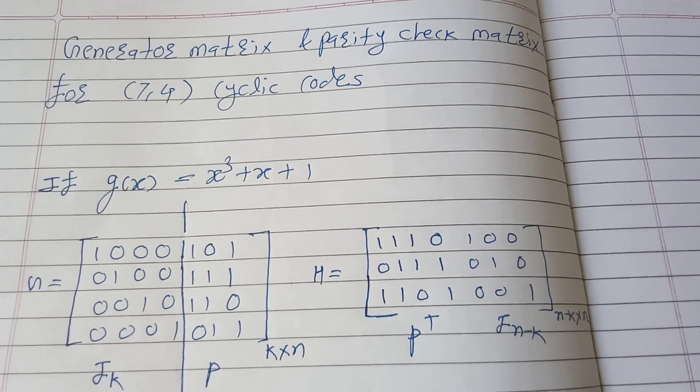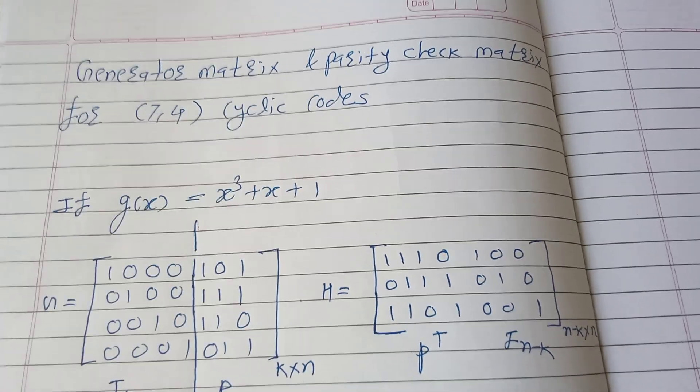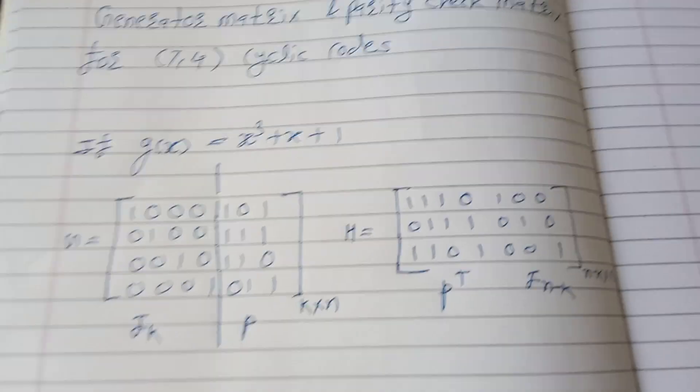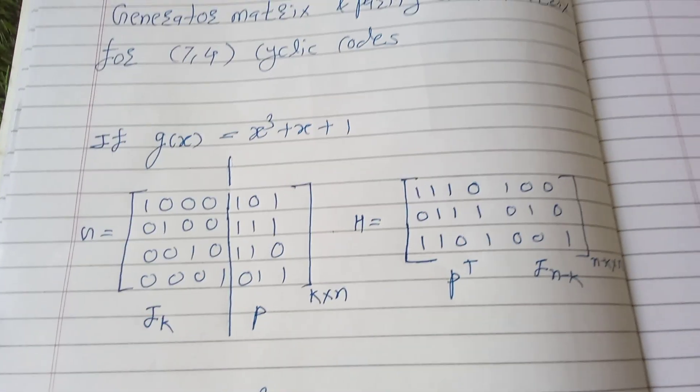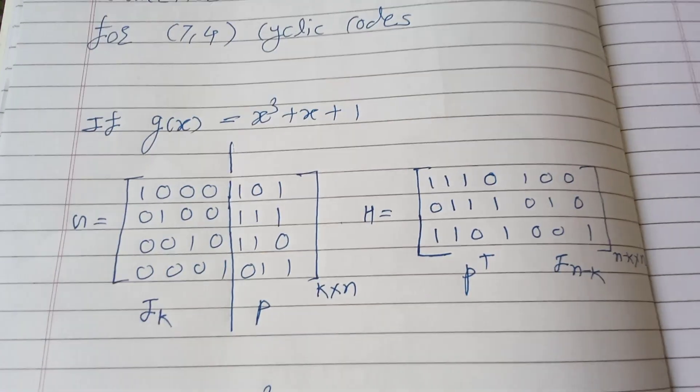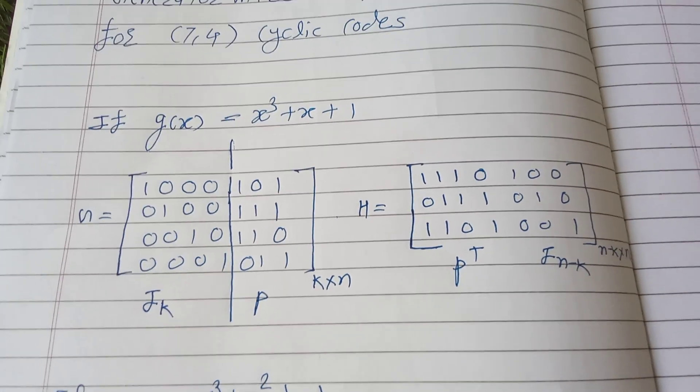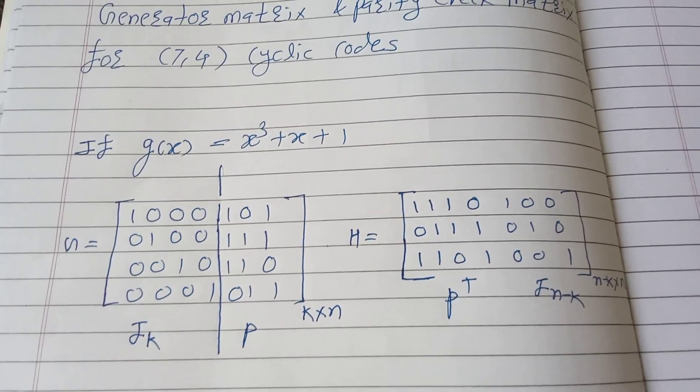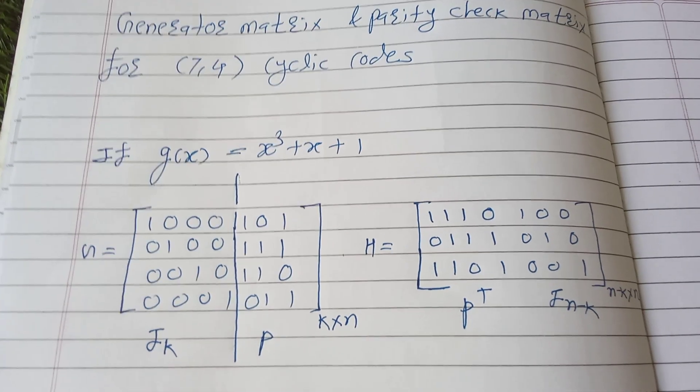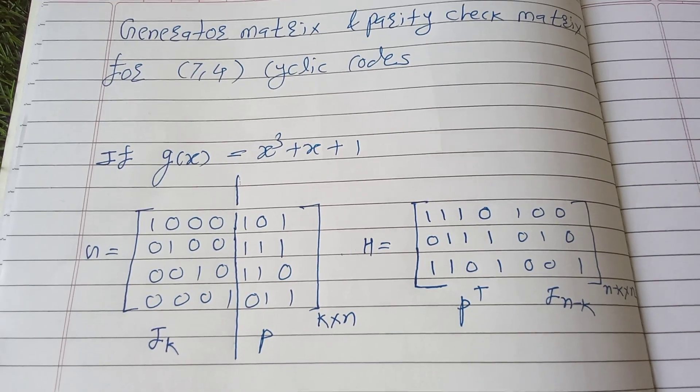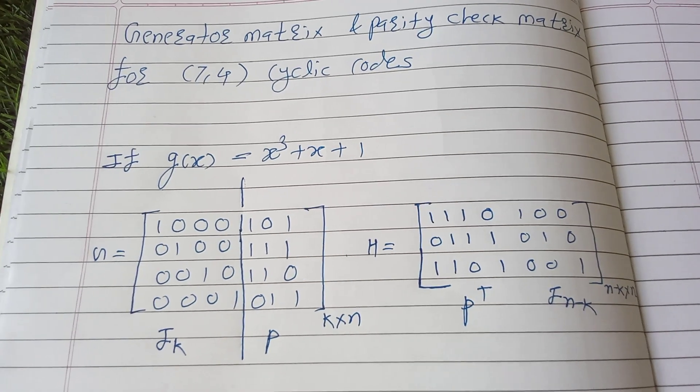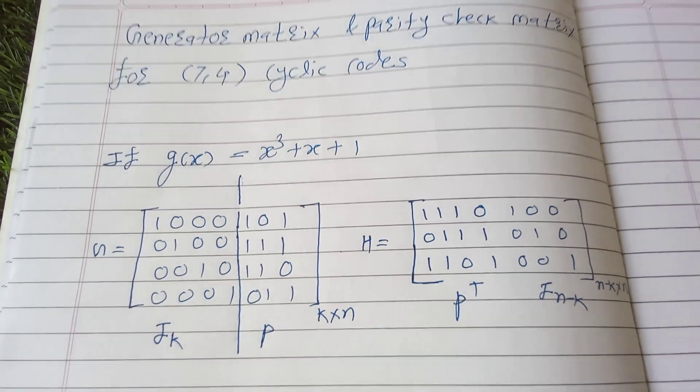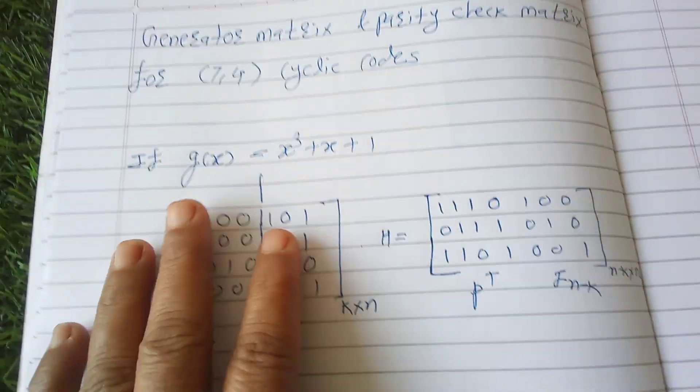Let us see how to obtain parity check matrix when the generator matrix is given. You should remember by heart these generator matrix and parity check matrix because mostly 7,4 cyclic codes are asked in university exams. We have already derived it. So if g(x) is x³ plus x plus 1, then generator matrix is this one.